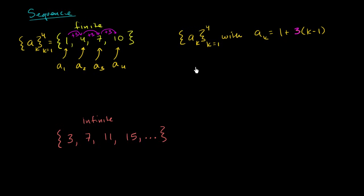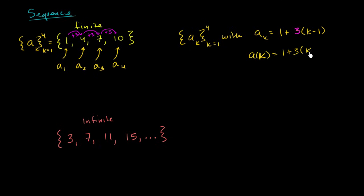You can verify that this works. If k equals 1, you get 1 minus 1 is 0, so a sub 1 is 1. If k equals 2, you get 1 plus 3, which is 4. If k equals 3, you get 3 times 2 plus 1, which is 7 — so it works out. This is one way to explicitly define our sequence using function notation. I've essentially defined a function here: a of k equals 1 plus 3 times (k minus 1), where the domain is restricted to positive integers.